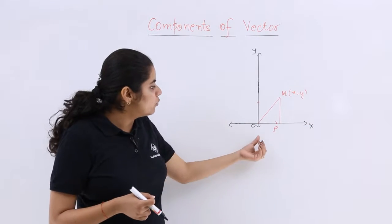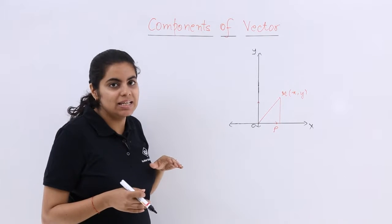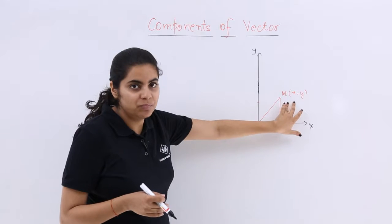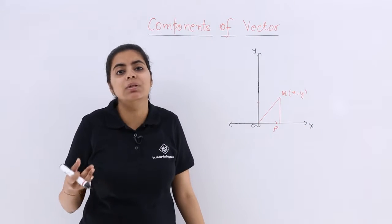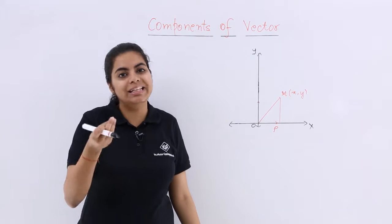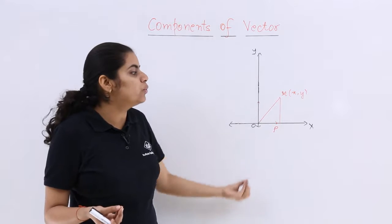Now what should be the component of vector? What I say is that if there is a point m which has the coordinates x, y and I need to study it with the help of components in two dimensions, then what I can do is I can resolve into two components.